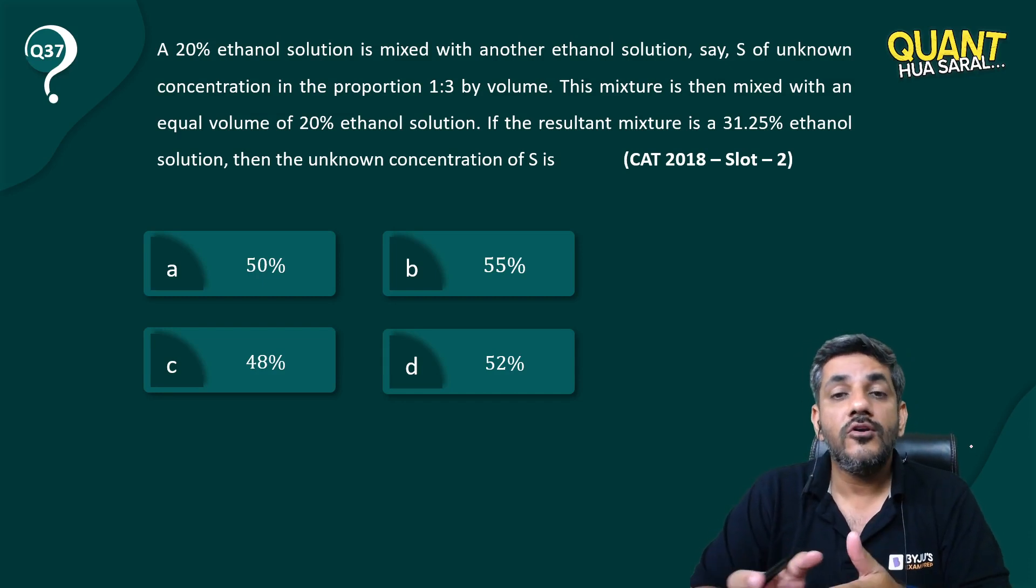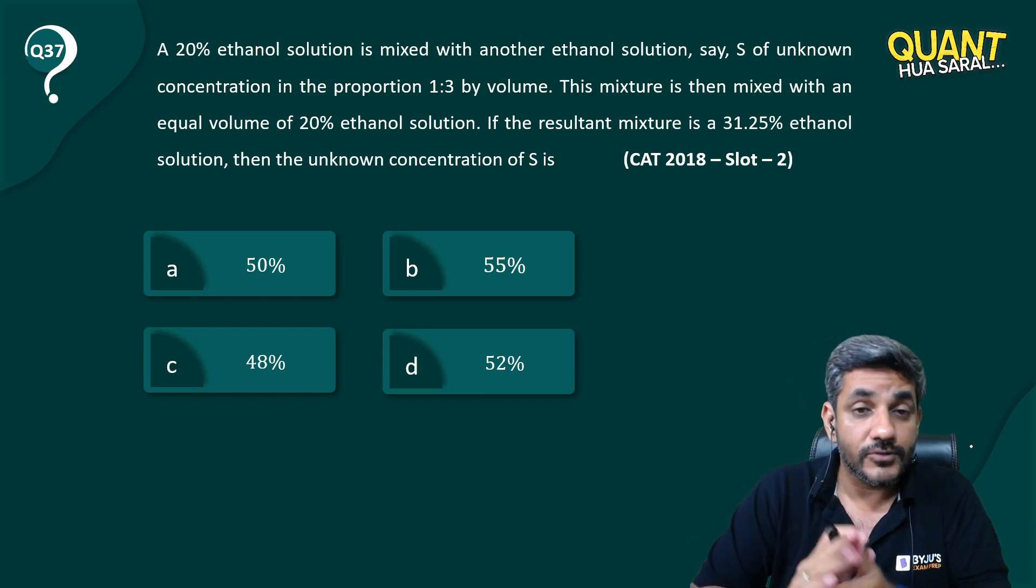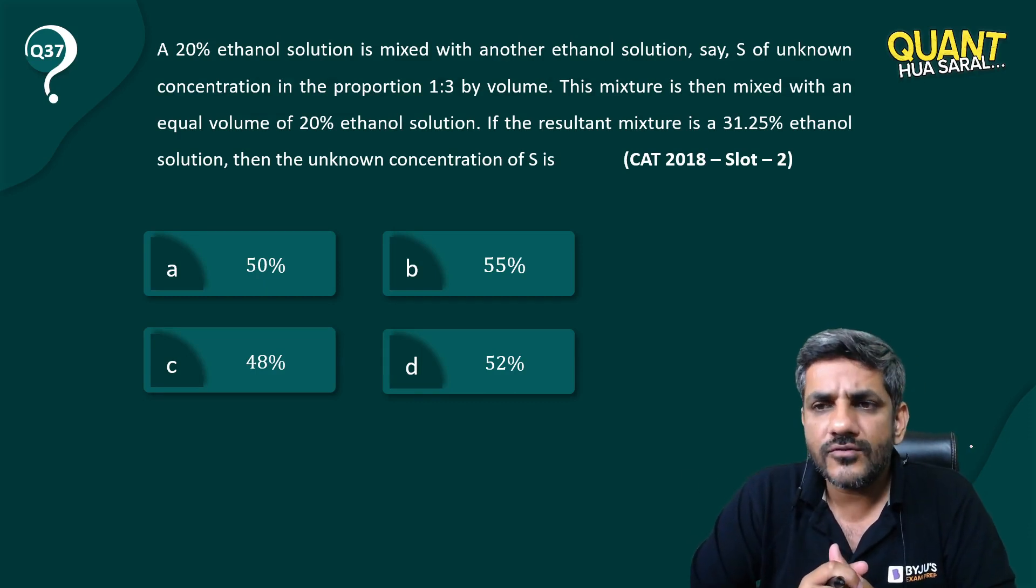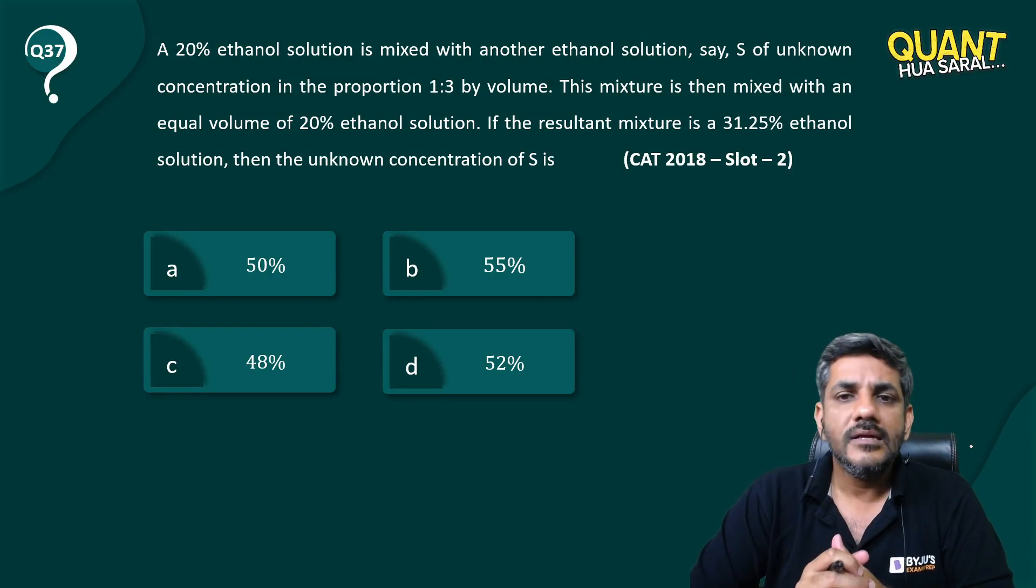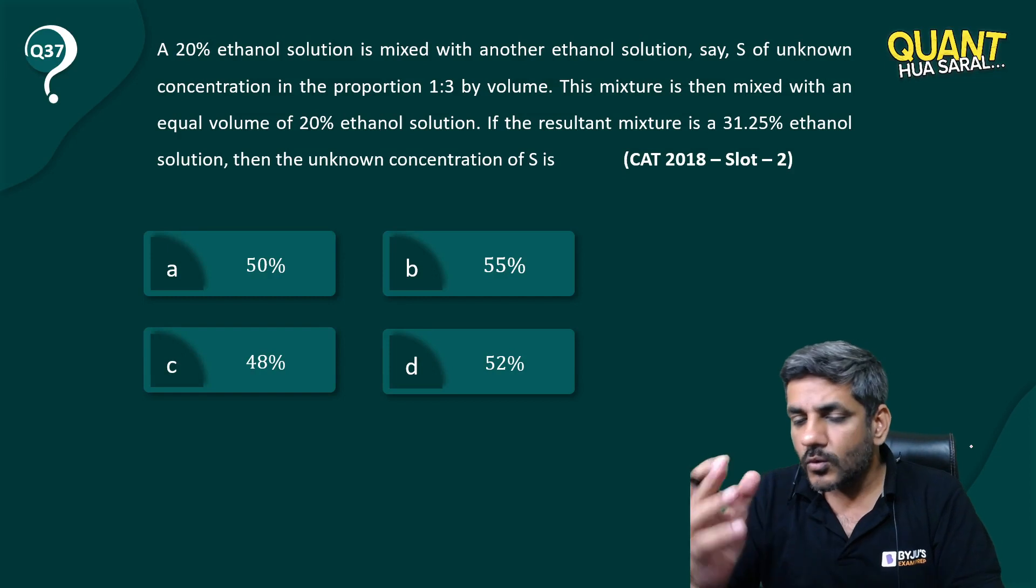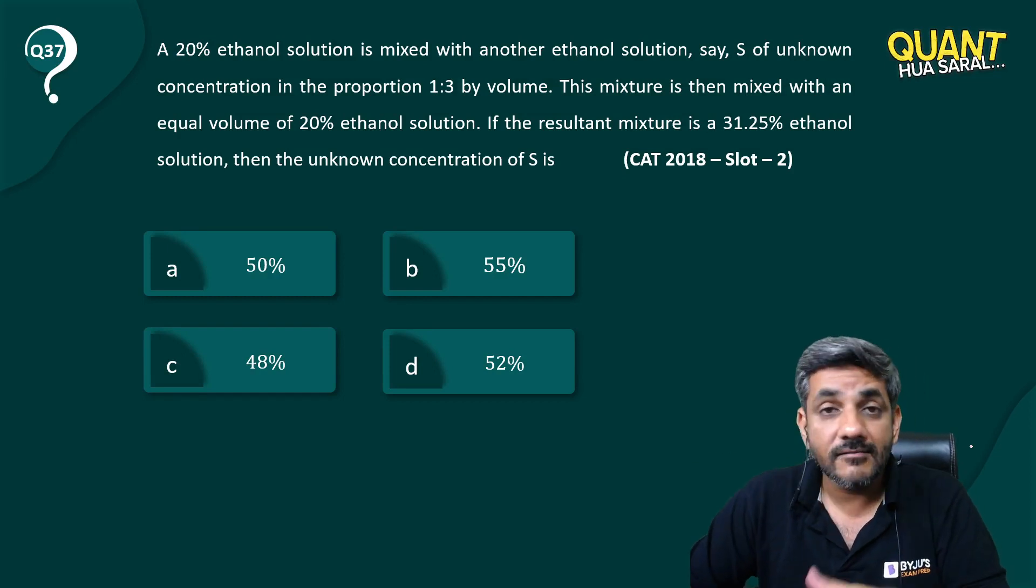is then mixed with an equal volume of 20% ethanol solution. If the resultant mixture is a 31.25% ethanol solution, then what is the unknown concentration of S? Once again, as I have always said, visualization is important, so I have made a structure for you.